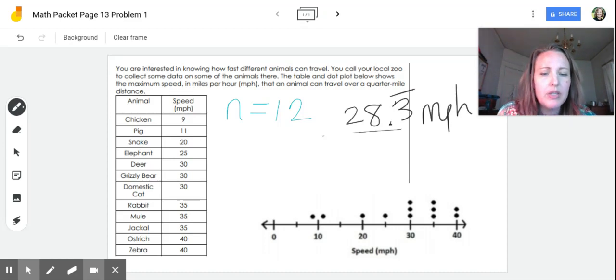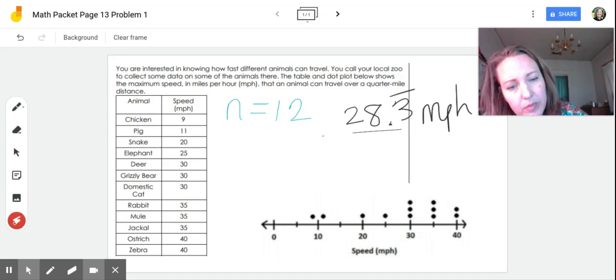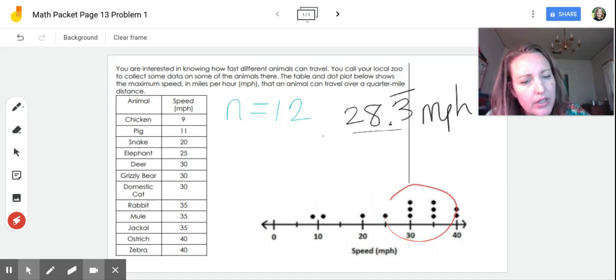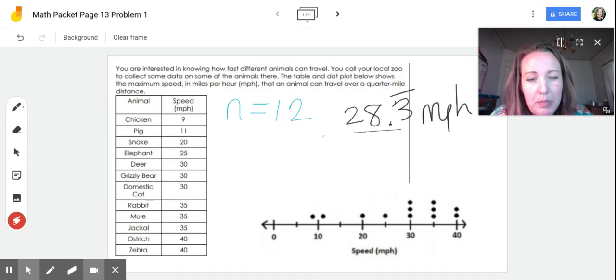The other thing that we can use on here is the mode. And this set of data is called bimodal. Unimodal is like a unicycle, it has one wheel. Bimodal has two modes. A trimodal has three modes.